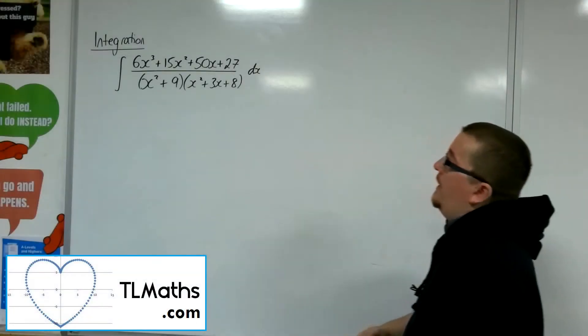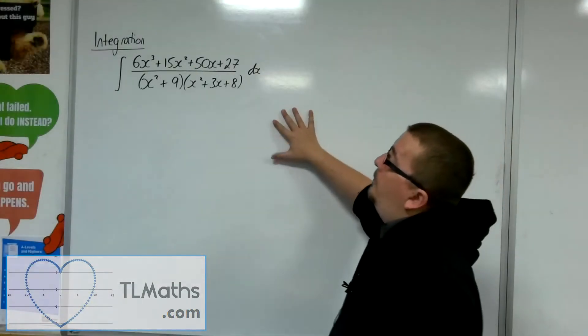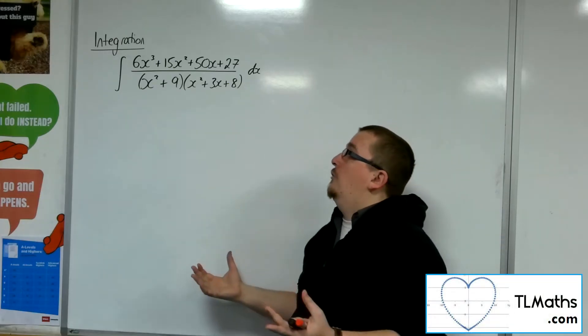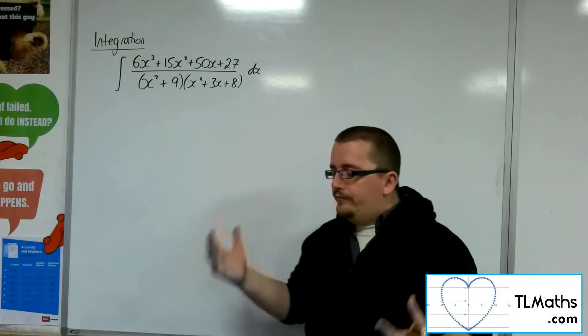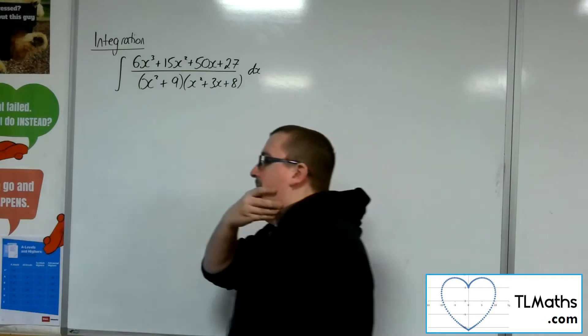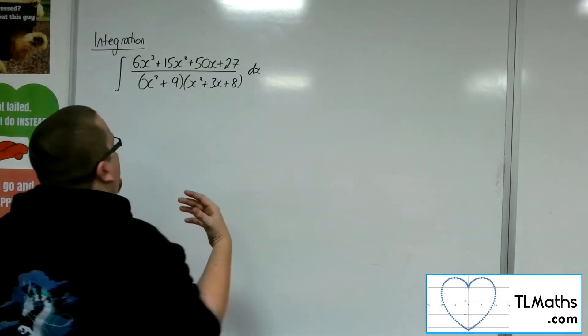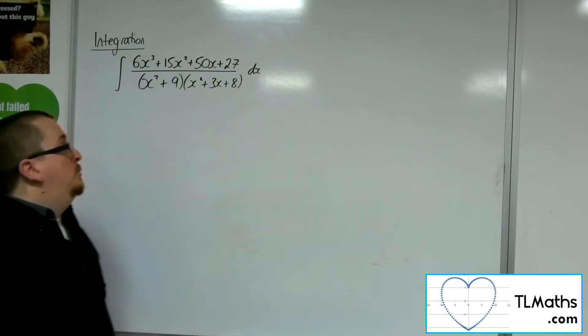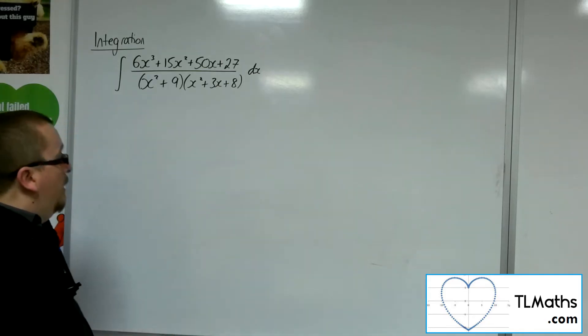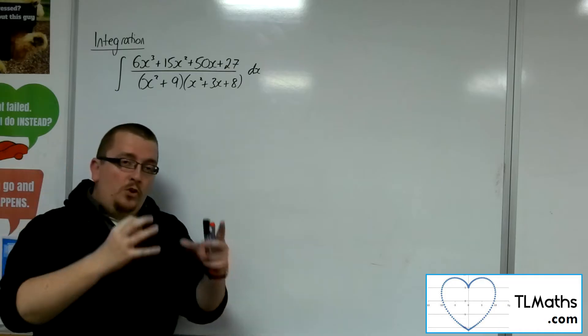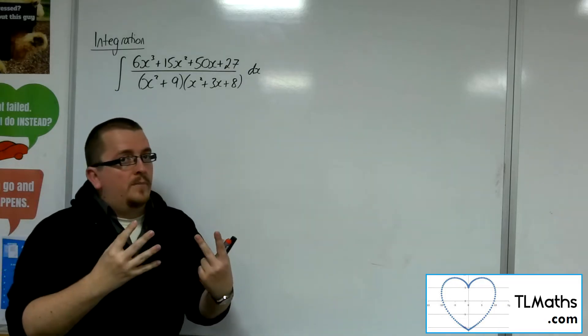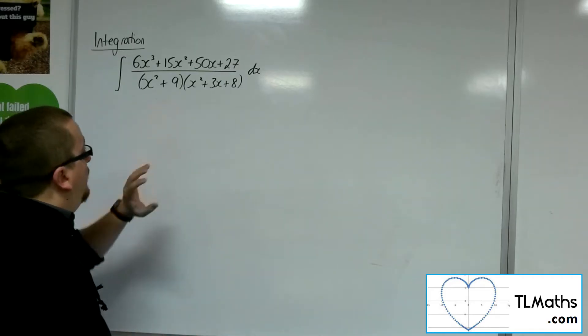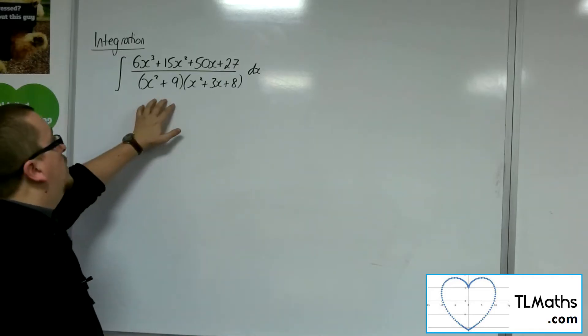Okay, so let's say we wanted to integrate 6x cubed plus 15x squared plus 50x plus 27 over x squared plus 9 times x squared plus 3x plus 8. This one is certainly an extension problem, as you might have guessed by the title. The thing to notice about the two brackets in the denominator is that neither will factorize. This one, x squared plus 9, is obvious.